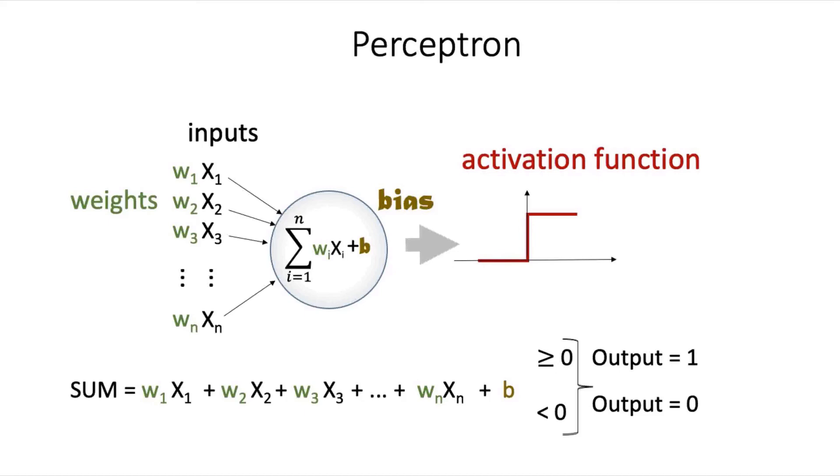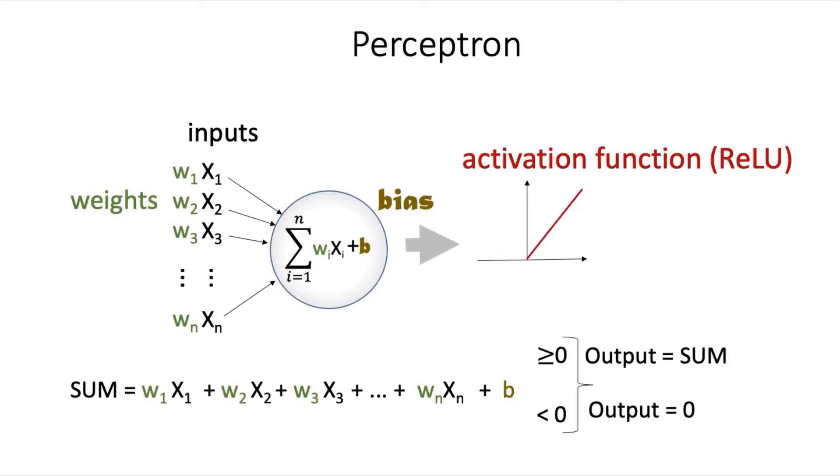While the original perceptron used a step activation function, single neurons in modern neural networks use a variety of activation functions. A common one that's used is called ReLU, which stands for Rectified Linear Units. For the ReLU activation function, like the step function, if the sum is less than zero, the neuron would output a zero. But now, if the sum is greater than zero, the neuron will leave the sum alone and output the sum itself.